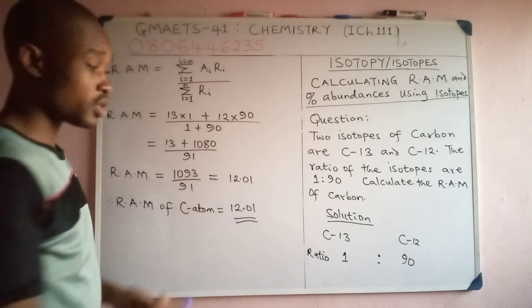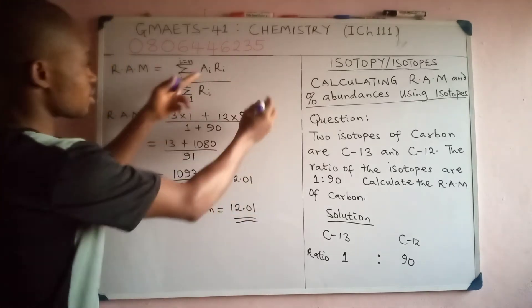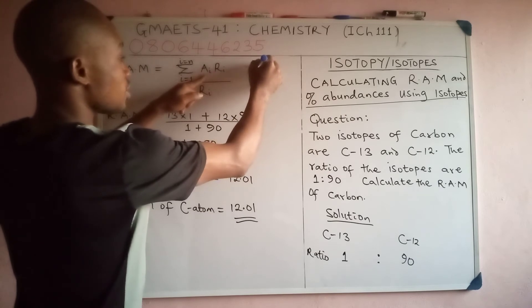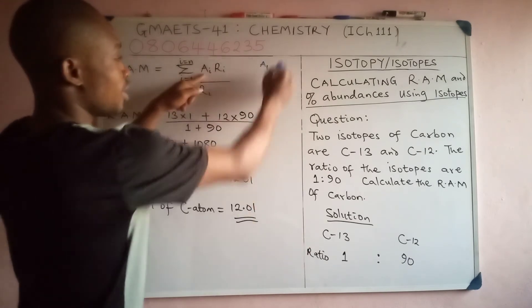There are two isotopes here, so we're going to have AI for the first one. Let's say carbon-13, let's say it is a1, that is mass number 1, and the value is 13. Then we have R1, the ratio of that carbon-13 is 1.